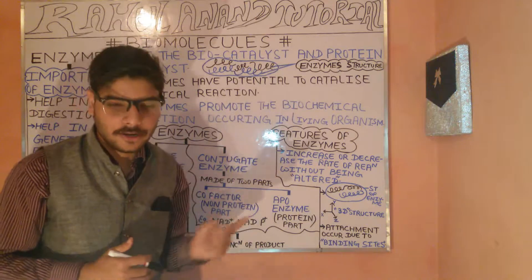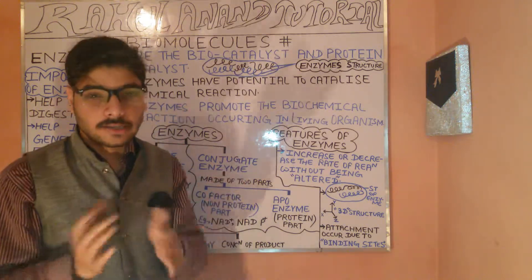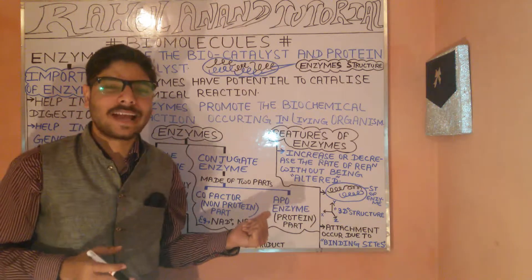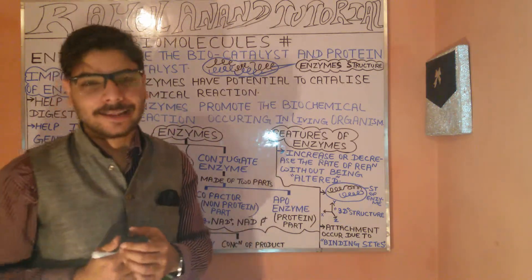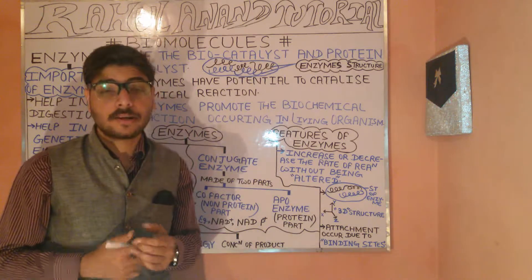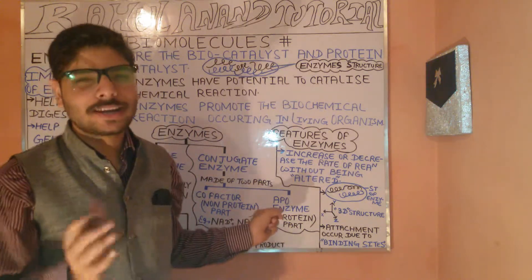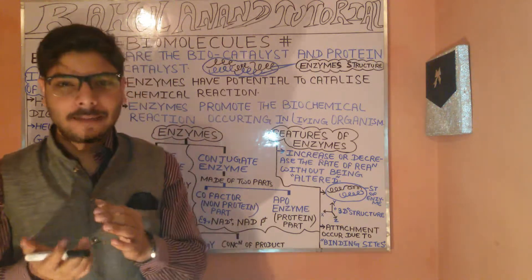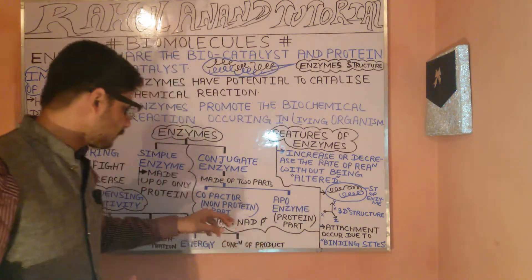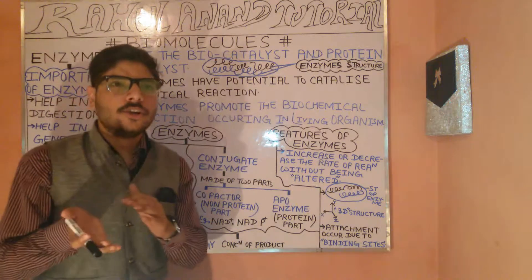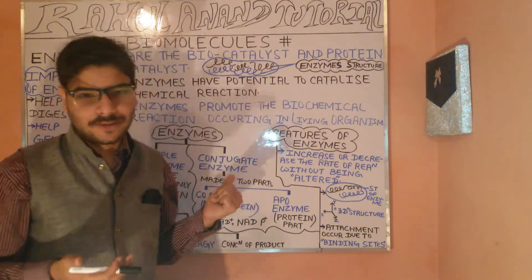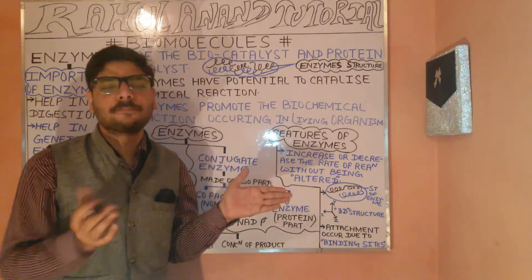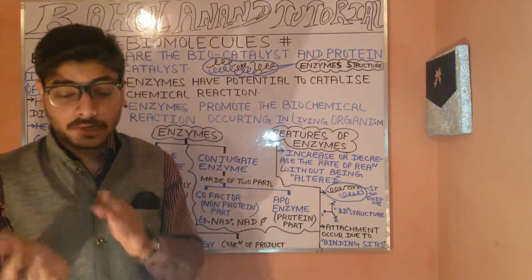Now let's understand the different types of enzymes. We have two main types: simple enzymes and conjugate enzymes. Simple enzymes are made up of only the protein part.